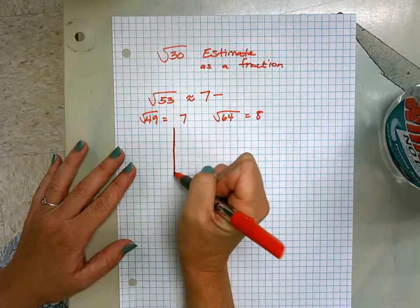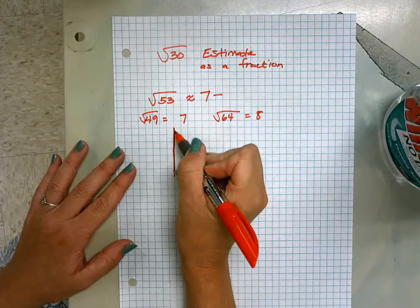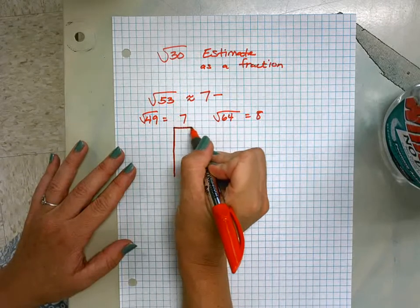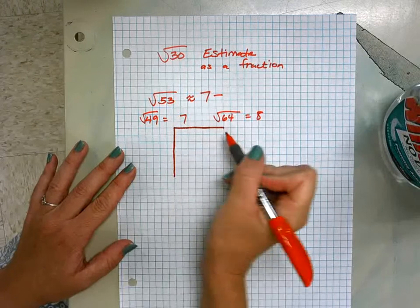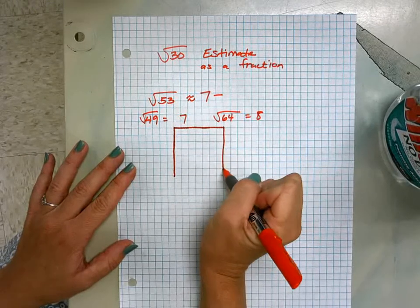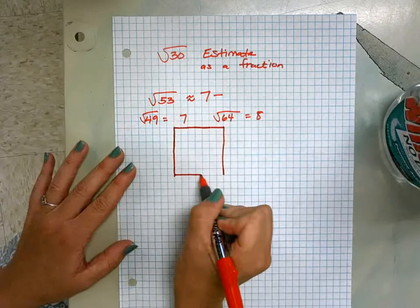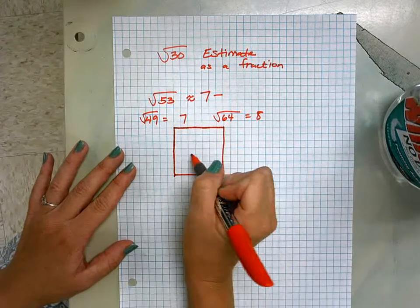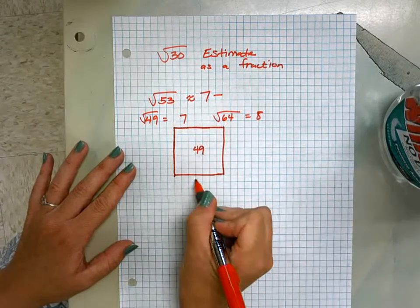1, 2, 3, 4, 5, 6, 7. 1, 2, 3, 4, 5, 6, 7. And then across. 1, 2, 3, 4, 5, 6, 7. So this is my area of 49 and the square root of that is 7.